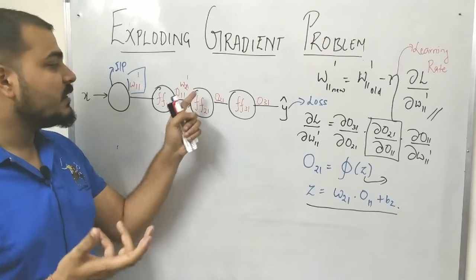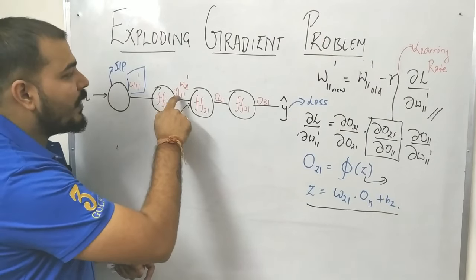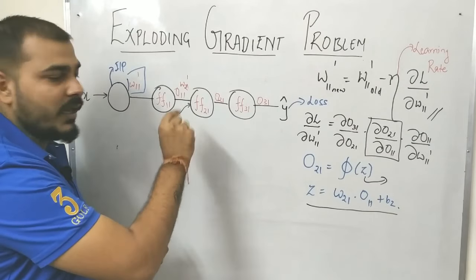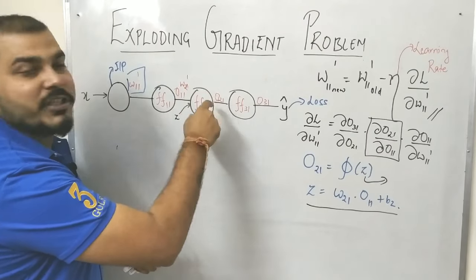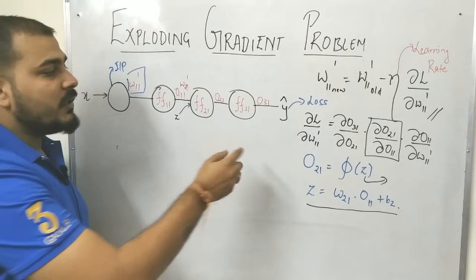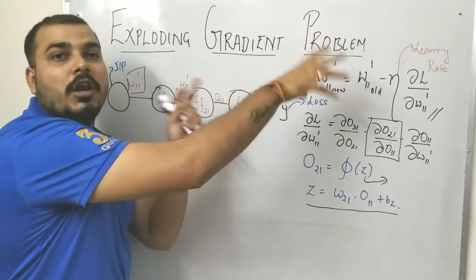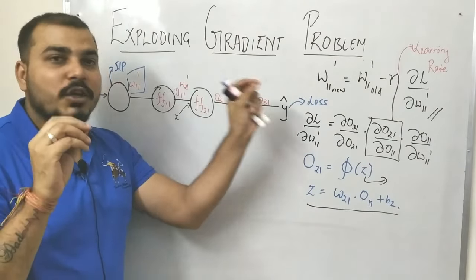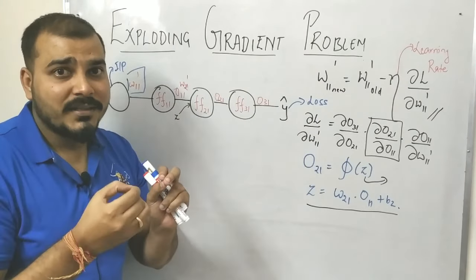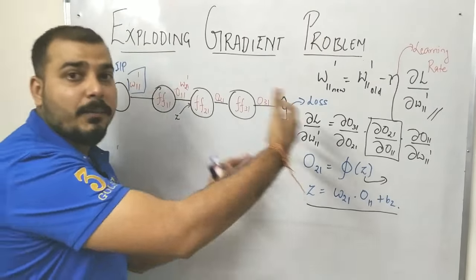After the activation function is applied, I'm assigning another weight w21 to the next neuron in the next hidden layer. The output o11 gets multiplied with w21 — to make it simple I'm just writing it as z. This value gets passed to the next layer, the same operation happens, and we get the value in the output layer as y-hat. I then pass y-hat to a loss function, and to reduce that loss I use an optimizer, which reduces the loss by updating the weights in backpropagation.